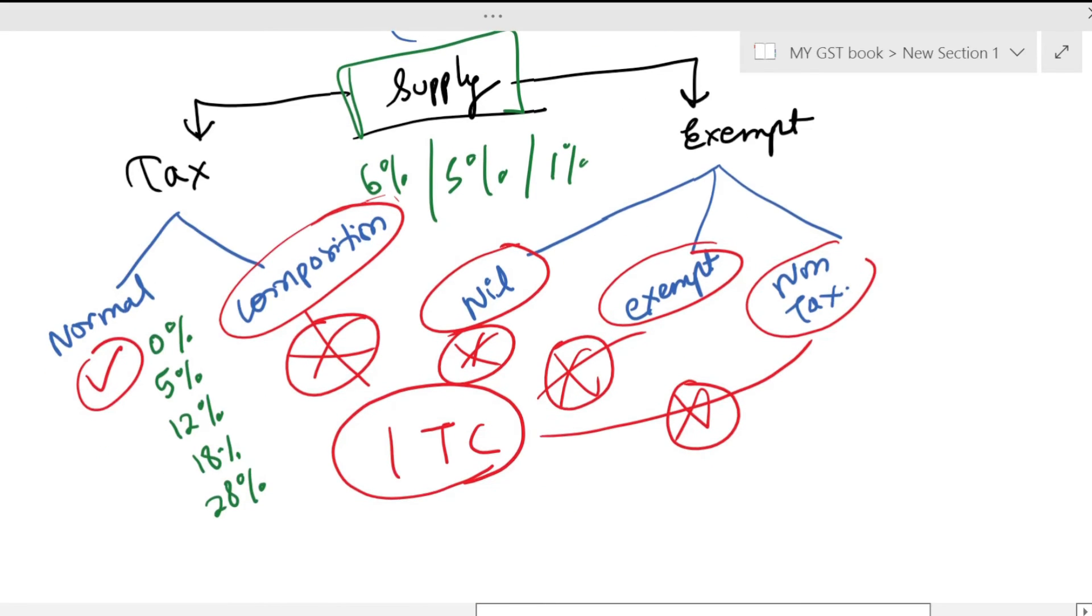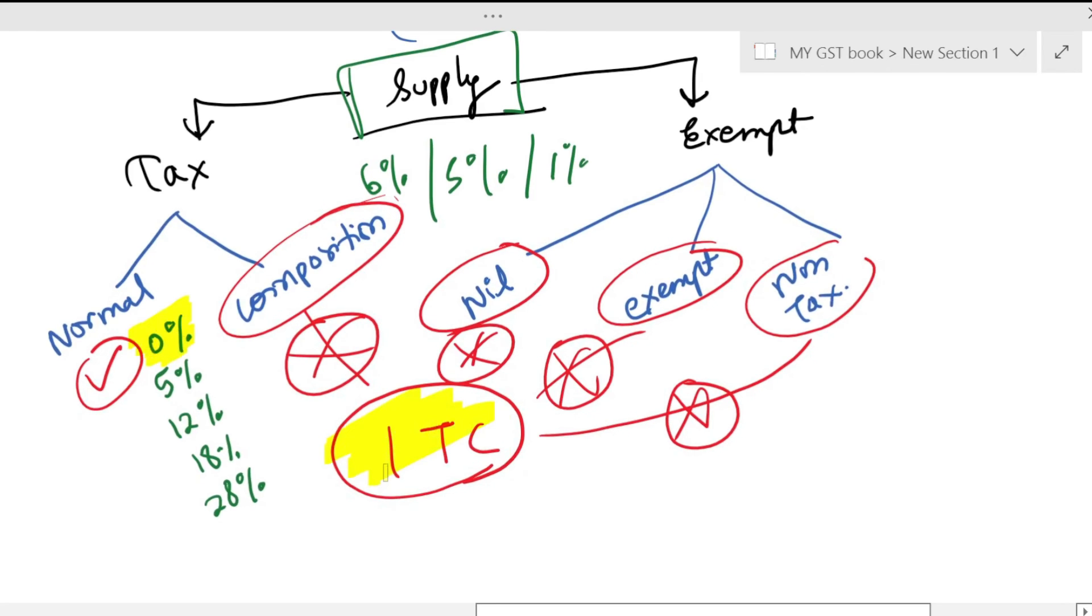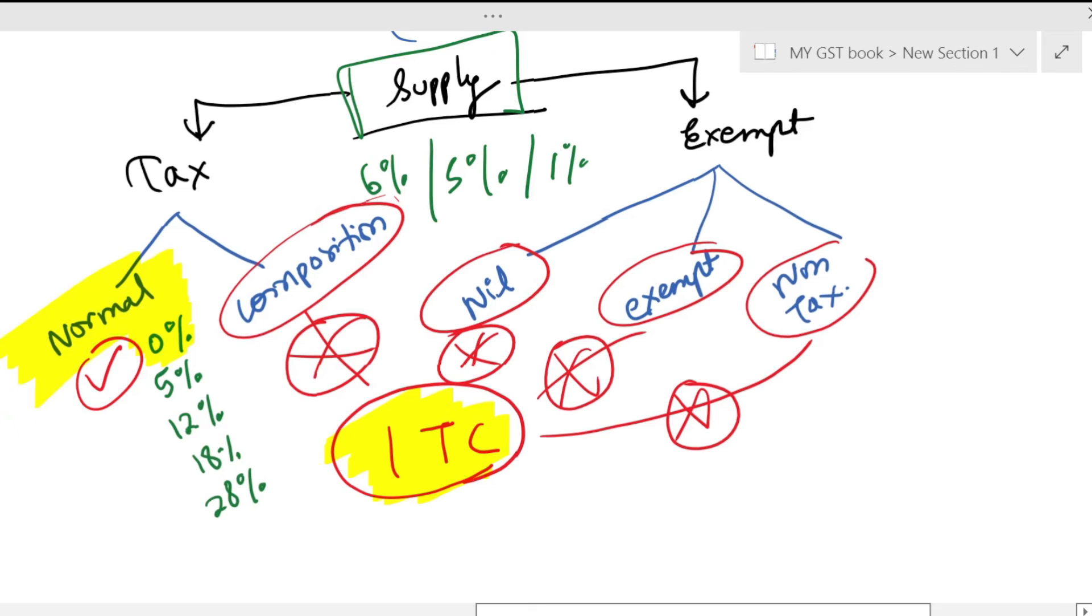And what is zero rated? I am going to tell you. Zero rated is normal and we can get it. In normal we get it, and in other cases we don't get it. So what is zero rated, clear?